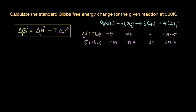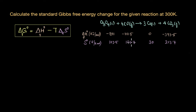We can use the formula ΔG°r = ΔH°r − TΔS°r. All we need to do is calculate the ΔH°r and ΔS°r values using the given information for the entire reaction and substitute them into this equation to get the standard Gibbs free energy change.